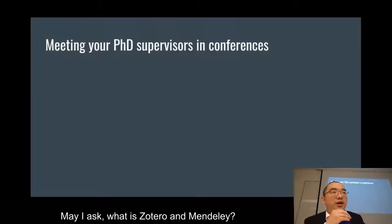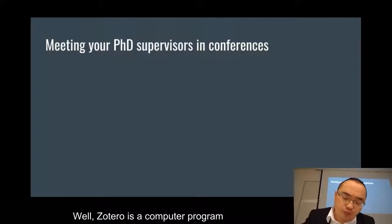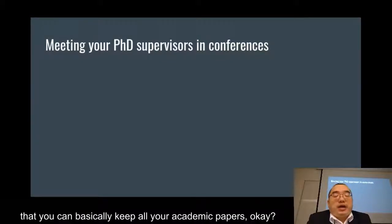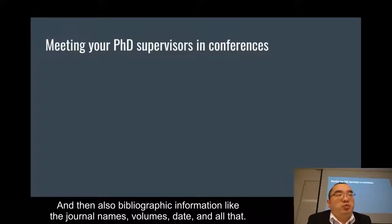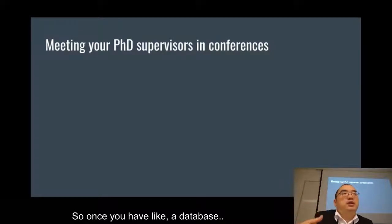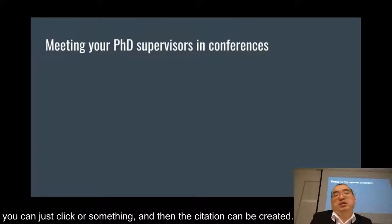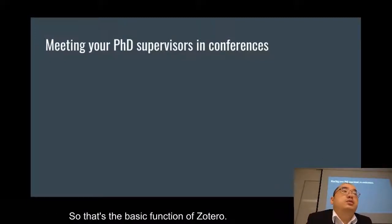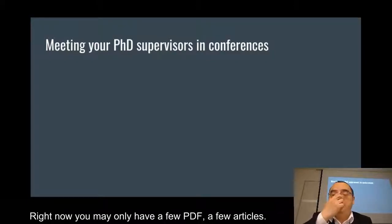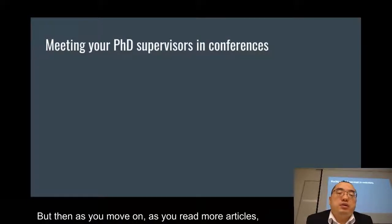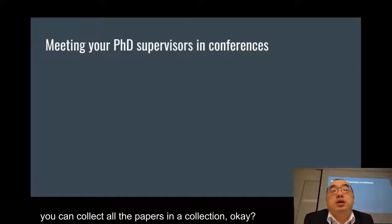Zotero is a computer program where you can keep all your academic papers — save the PDFs and bibliographic information like journal names, volumes, and dates. Once you have a database, if you want to cite an article you can just click and the citation is created. It's an ongoing process — right now you may only have a few articles, but as you read more, you can collect all the papers in your collection.